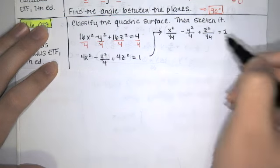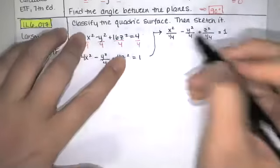A squared is one-fourth, b squared is four, c squared is one-fourth, and it opens around the y-axis.